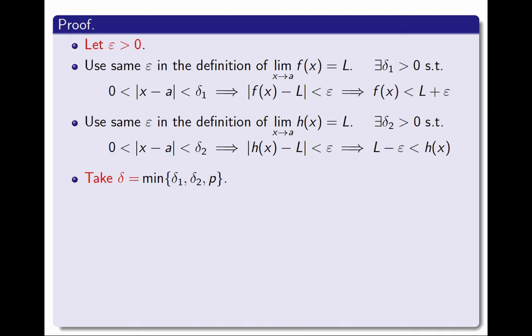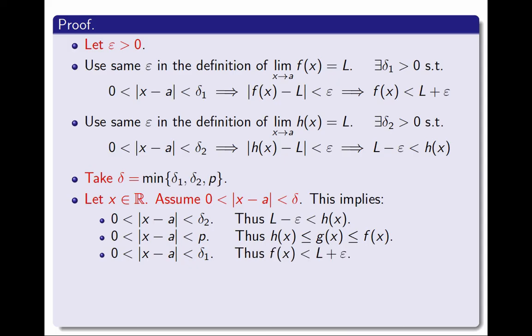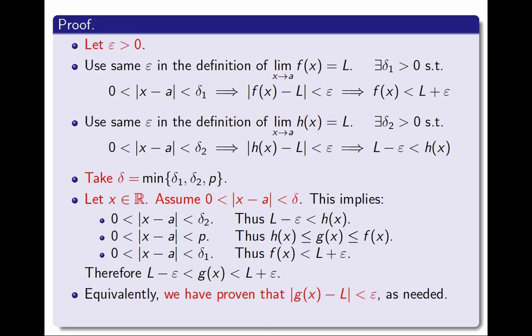Then I take as my value of delta the minimum of delta 1, delta 2, and p. The smallest among three positive numbers is still a positive number. Next, I fix an arbitrary real number x, and I assume the distance between x and a is between 0 and delta. This implies that it is also smaller than delta 2, smaller than p, and smaller than delta 1. Since it is smaller than delta 2, I get that h is greater than L − ε. Since it is smaller than p, I get that g is between h and f. And putting together all these inequalities in this order, I conclude that L − ε < g < L + ε, or equivalently, that the distance between g and L is less than ε, which is exactly what I needed. And this completes the proof.